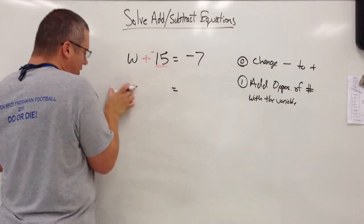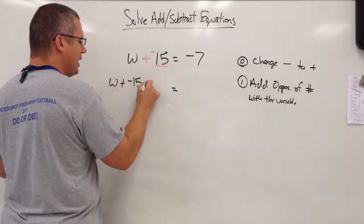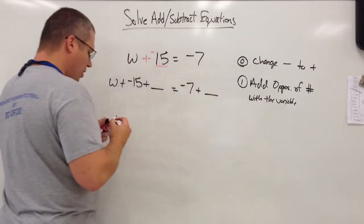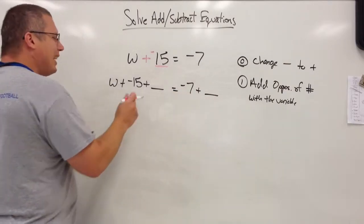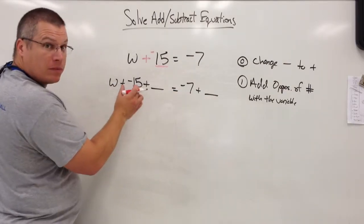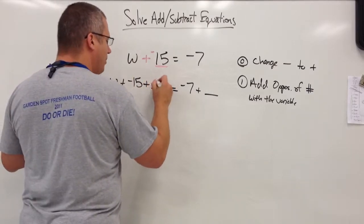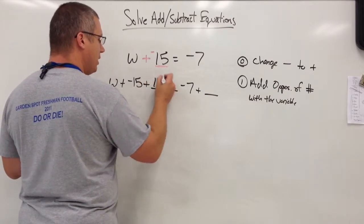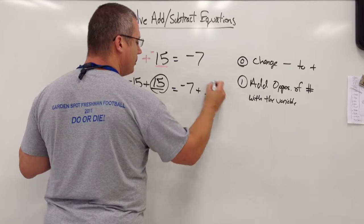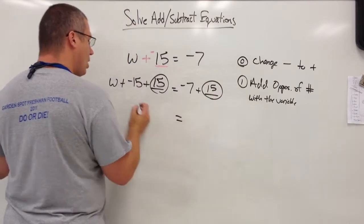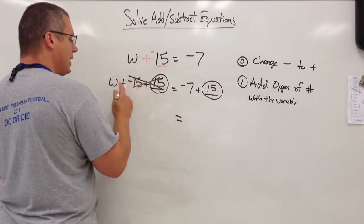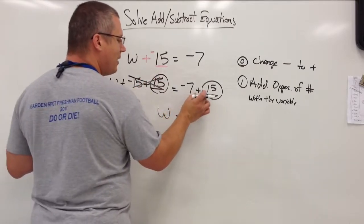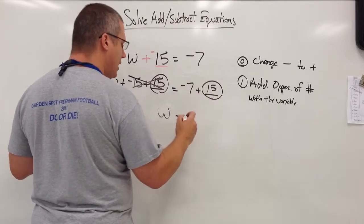So I rewrite this line. W plus negative 15. I've got to add something. I'm going to rewrite this side. Negative 7 plus something. The somethings must be the same. What should I add to get rid of the negative 15? Positive 15. It's opposite. And I'm going to add 15 to this side. Negative 15 plus 15 is 0. It disappears and goes bye-bye. The only thing I'm left with is a W. This side, negative 7 plus 15. Negative 7 plus positive 15 is 8.